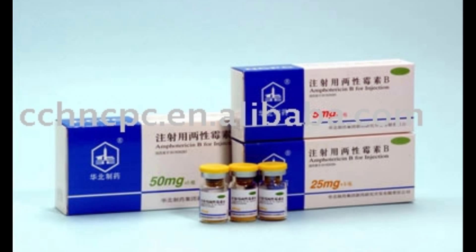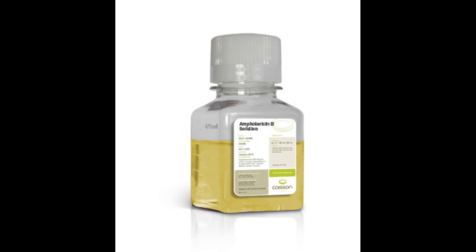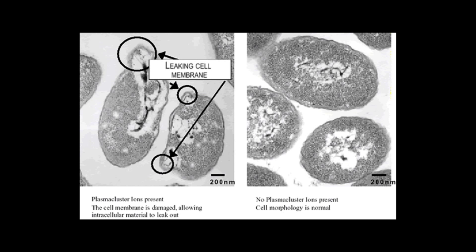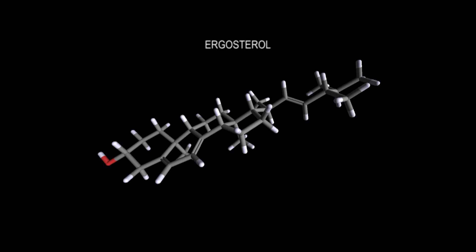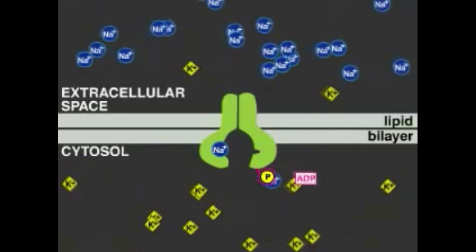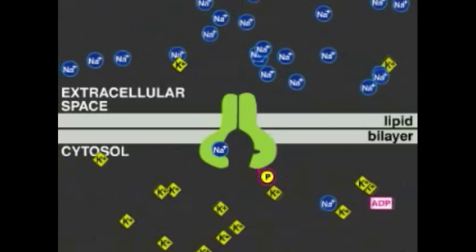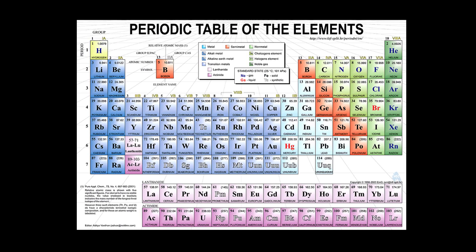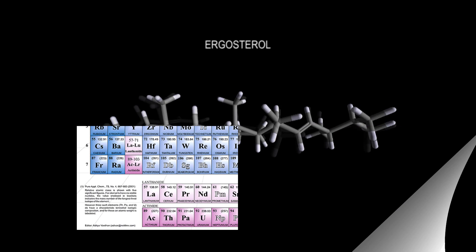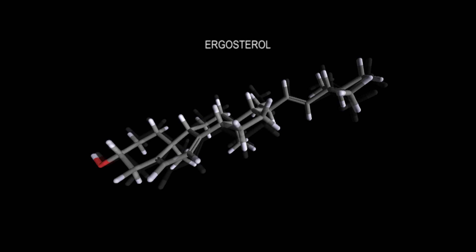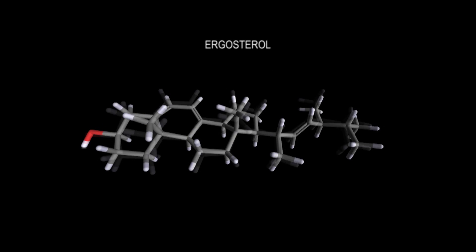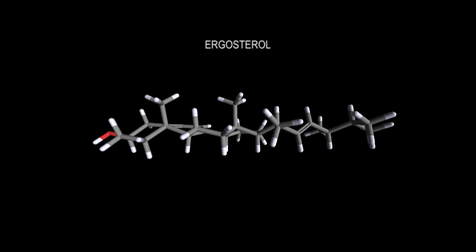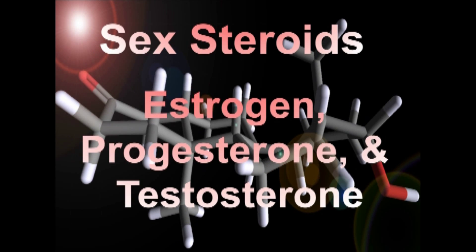Amphotericin B is an antifungal drug that targets ergosterol. It binds physically to ergosterol within the membrane and thus creates a polar pore in fungal membranes. This causes ions — predominantly potassium and protons — and other molecules to leak out, which kills the cell. Amphotericin B has been replaced by safer agents in most circumstances but is still used, despite its side effects, for life-threatening fungal or protozoan infections.